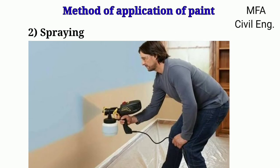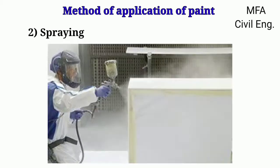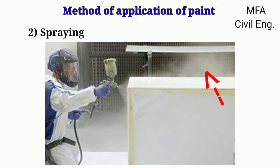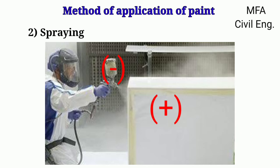Spraying is the most recent method, involving the atomization of paint with the help of a spray gun. This method is quite quick and also gives a smooth painted surface. A lot of labour is saved, but a large quantity of paint is wasted and the surrounding atmosphere gets polluted by the fine suspended particles of paint in the air. These disadvantages have been eliminated by making the article to be sprayed a positive charge, while the spray gun carries a negative charge. As the paint comes out of the negatively charged spray gun, it is immediately attracted toward the positively charged article to be painted.